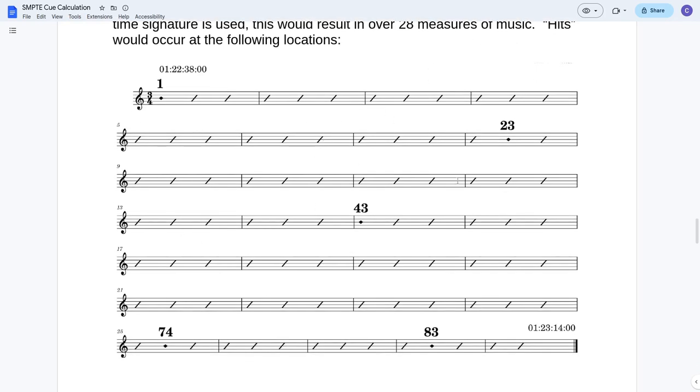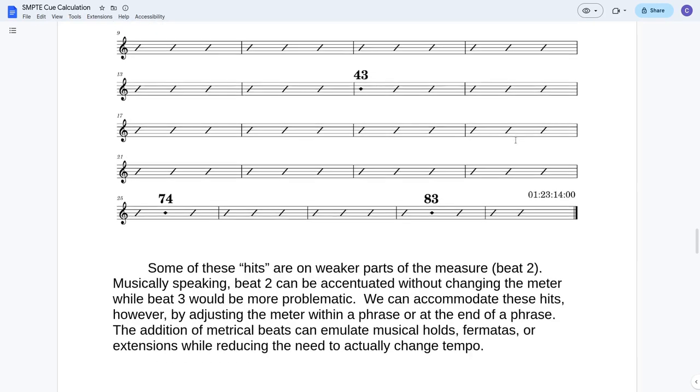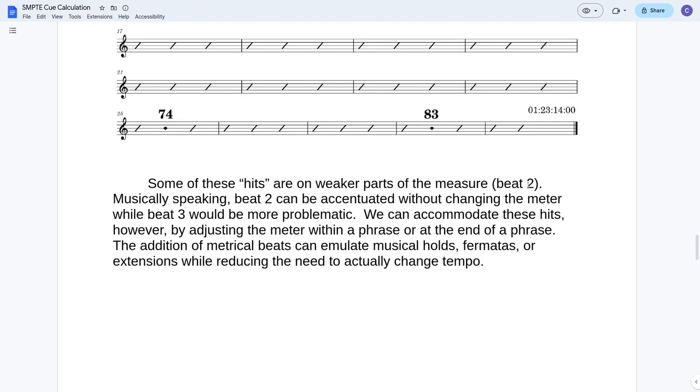Don't use an example based on what we've just discussed. A cue made up of 86 beats has hits at beats 1, 23, 43, 74, and 83. Given the hit on beat 1, the meter intended for most of the music can be started at this point to test how it lies with those hits. Assuming that a 3/4 time signature is used, this would result in over 28 measures of music. Here's the whole cue with the hits that we've listed.